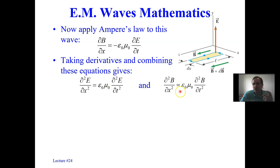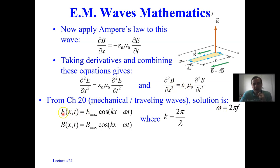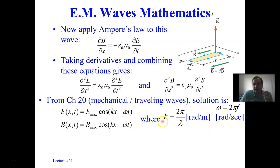These PDEs are the wave equation, which we know how to solve. The solution is: E(x,t) = E_max cosine(kx − ωt), and B(x,t) = B_max cosine(kx − ωt). K is the angular wave number, 2π over lambda (the wavelength), in radians per meter. Omega is the angular frequency, 2π f, in radians per second. The coefficient epsilon-naught mu-naught out front equals 1/c², so c equals 1 over the square root of epsilon-naught mu-naught.